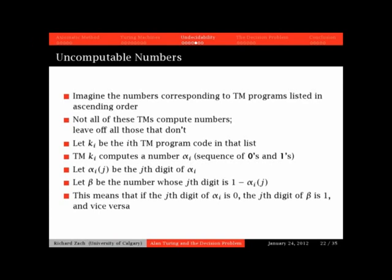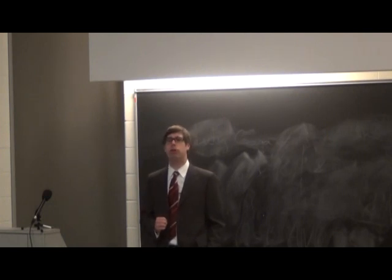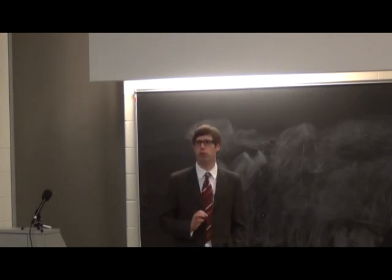Suppose we could... First of all, we can list all the natural numbers. Now, among all the natural numbers, there are some numbers that are codes of Turing machines, and among these codes of Turing machines, there are some that are codes of Turing machines which actually compute computable numbers — which write zero and one infinitely often on their tape. So let's list all of those and leave out all the ones that don't actually compute computable numbers. Let this sequence of numbers K_i be the sequence of codes of Turing machines which compute computable numbers.